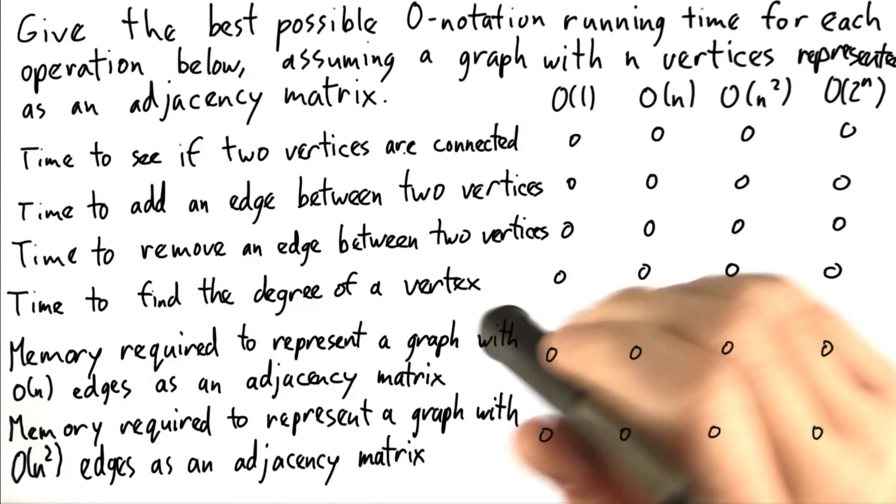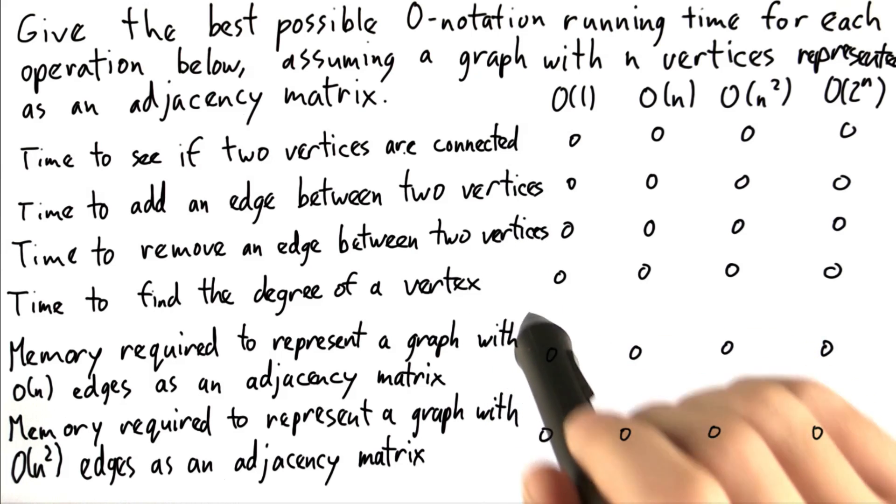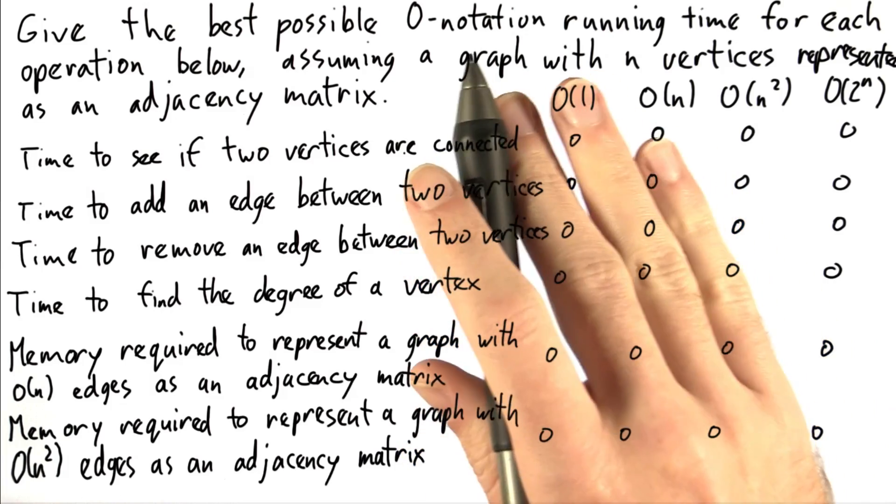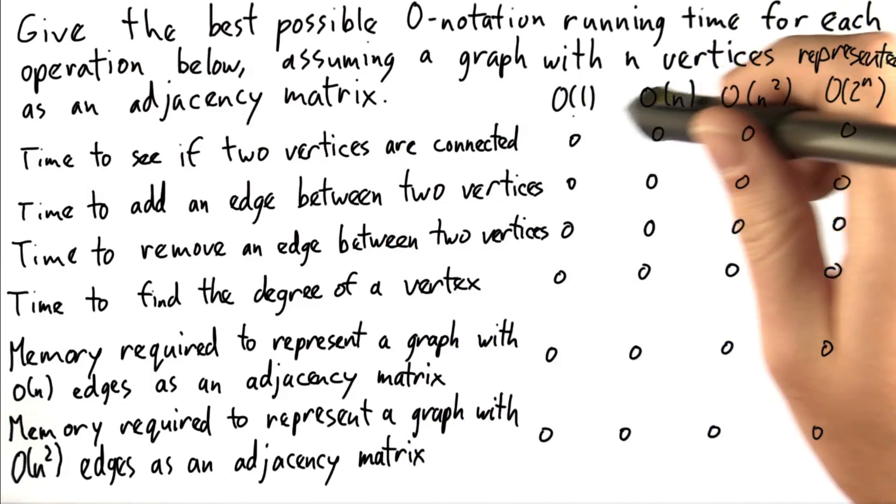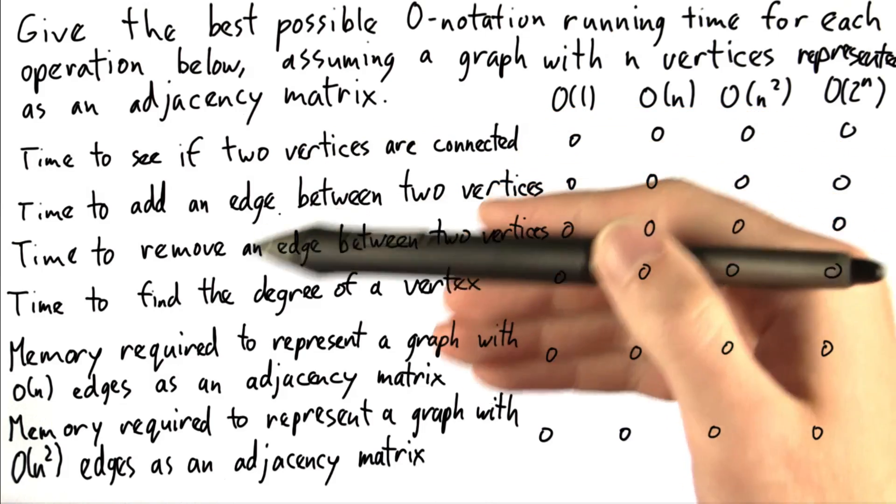We're also going to assume that the time it takes to access any particular element is constant and that the memory needed to represent a list of n elements is order n. So give me the big O notation of the time it takes to represent all of these.